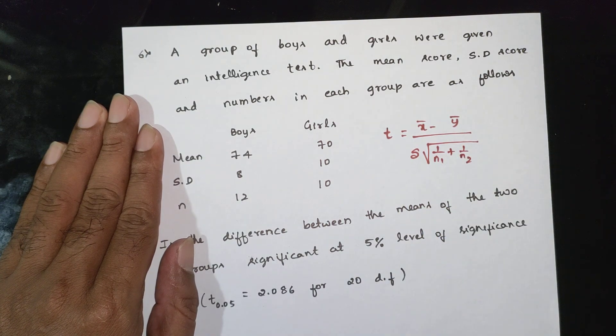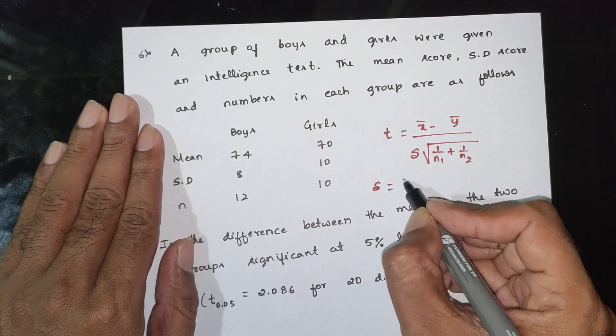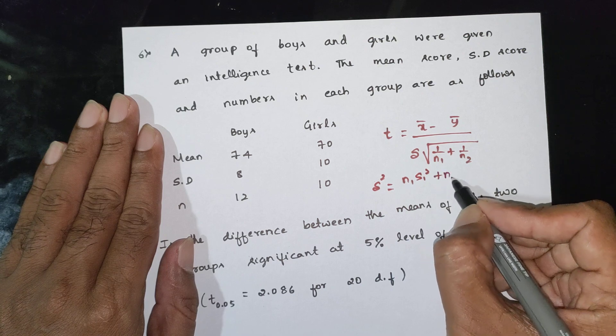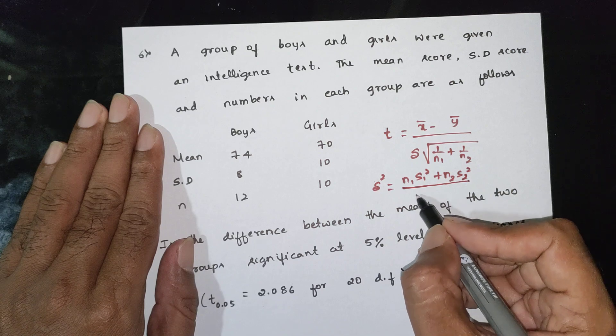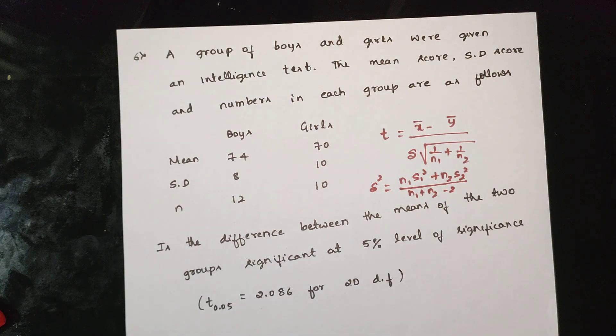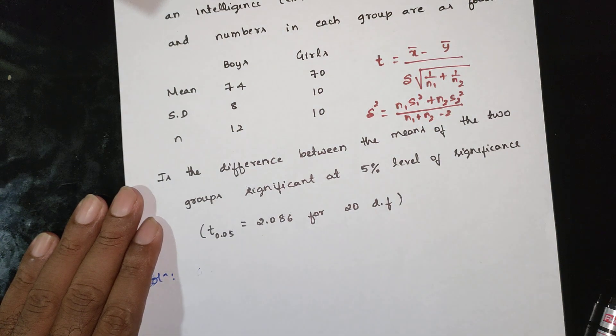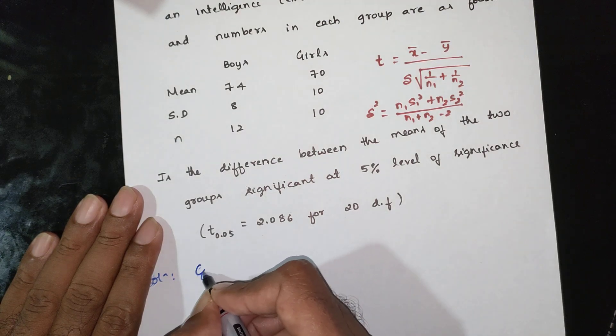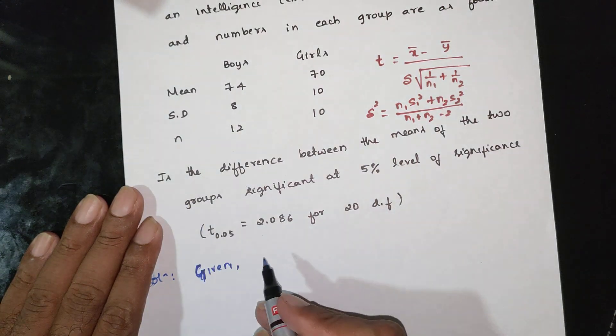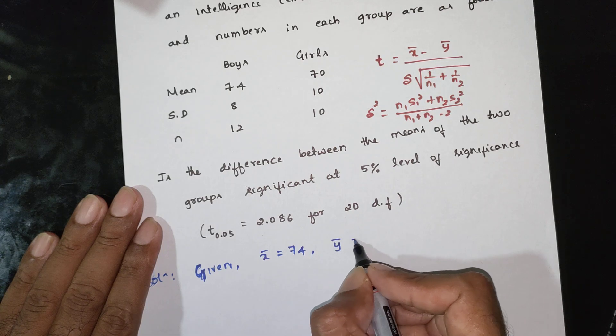This formula, s squared is equal to n1 times s1 squared plus n2 times s2 squared divided by n1 plus n2 minus 2.